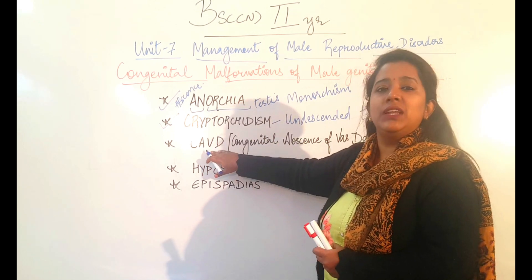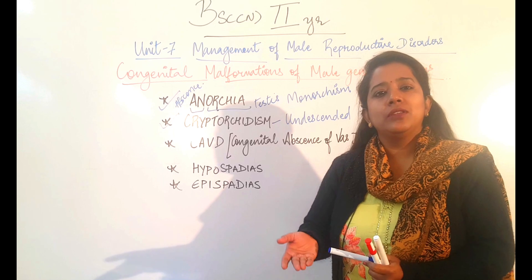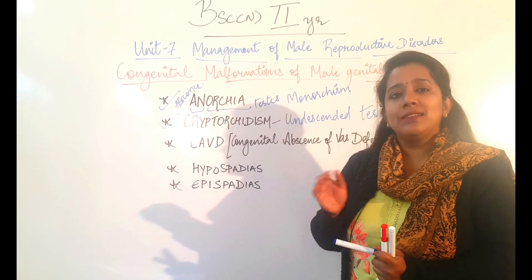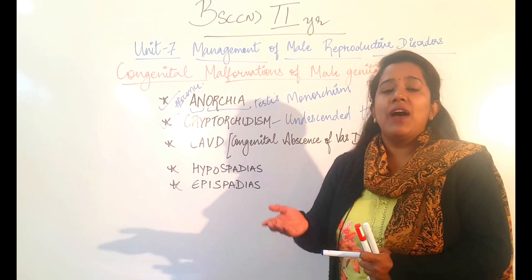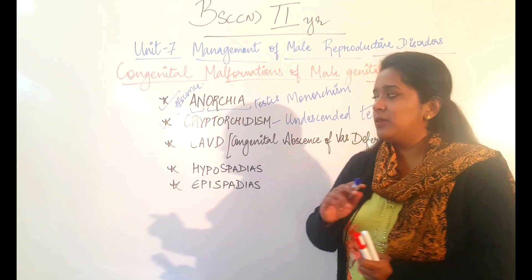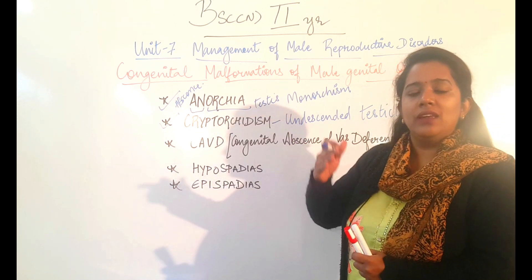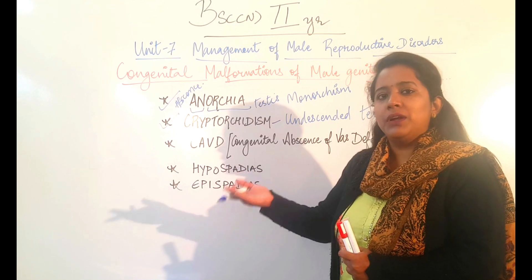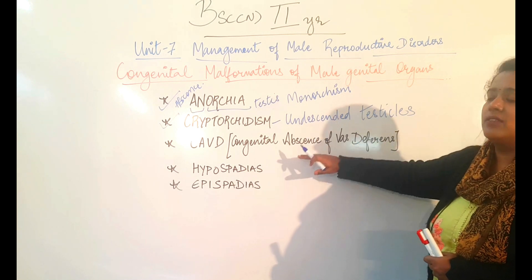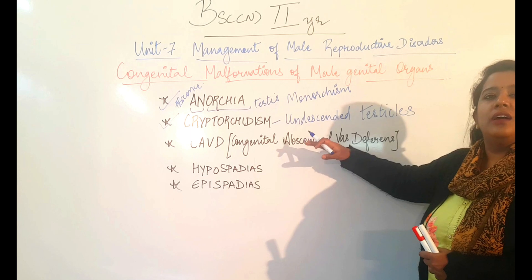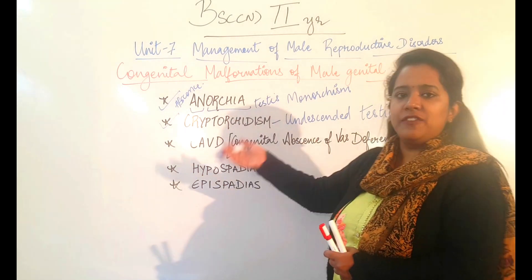In CAVD, such individuals can reproduce but not by the natural method, because the sperm produced in the testes normally travels through the vas deferens and comes out through the penis. When a person has an absent vas deferens, the testes are producing sperm but it is not getting transported. This congenital absence of vas deferens is called CAVD. In this type of condition, the person can reproduce with the help of assisted reproductive methods — artificial tube methods.